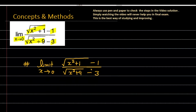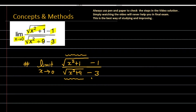अब देखें इस case में, अगर मैं इस function में x को 0 की ओर approach कराता हूँ, तो numerator वाला part 1 की ओर approach करेगा और 1 minus 1 से numerator 0 की ओर tend करता है। Similarly, denominator में यह quantity 3 की ओर tend करेगी अगर x को 0 की ओर approach कराएं, और 3 minus 3 भी 0 की ओर approach कर रहा है। Finally यह format 0 upon 0 form का है।